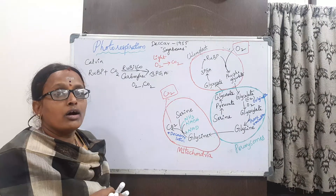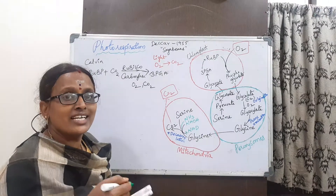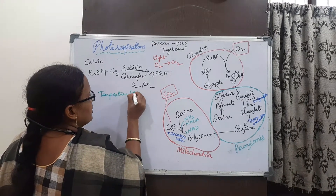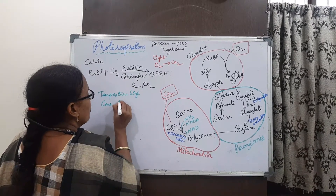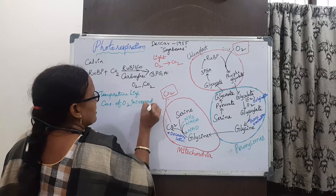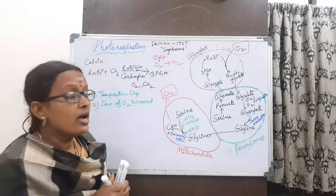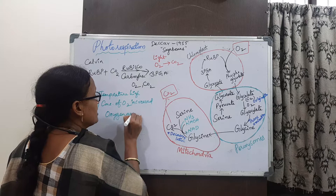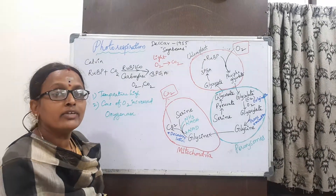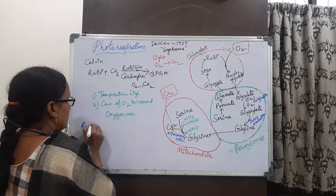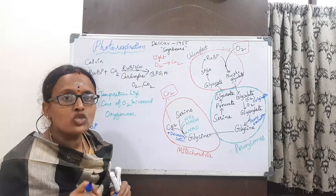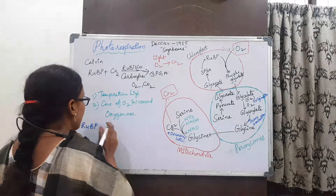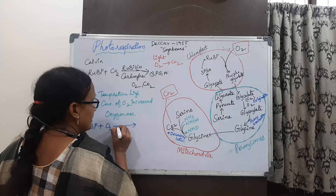When the conditions change — specifically when temperature is high and concentration of oxygen is increased — Rubisco acts as an oxygenase instead of a carboxylase. So RuBP binds with oxygen instead of carbon dioxide under these two conditions: high temperature and high oxygen concentration.